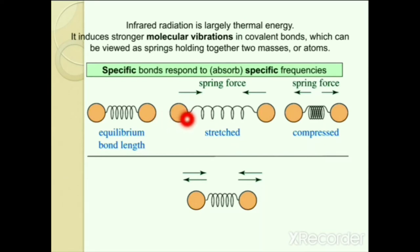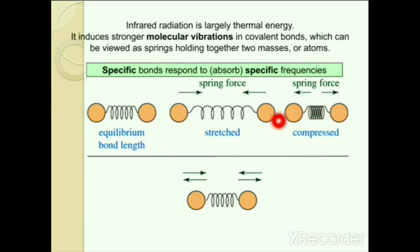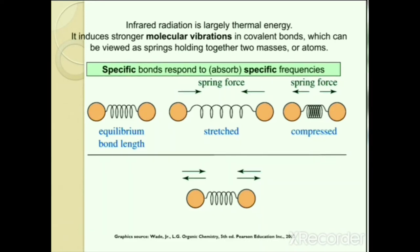Change in bond length generates vibrational modes. Stretching mode is due to an increase in bond length, and compression mode is due to a reduction in bond length. Together they represent molecular vibration. Vibrations fall into two main categories: stretching and bending. Stretching causes a change in bond length, while bending causes a change in the angle between two bonds.